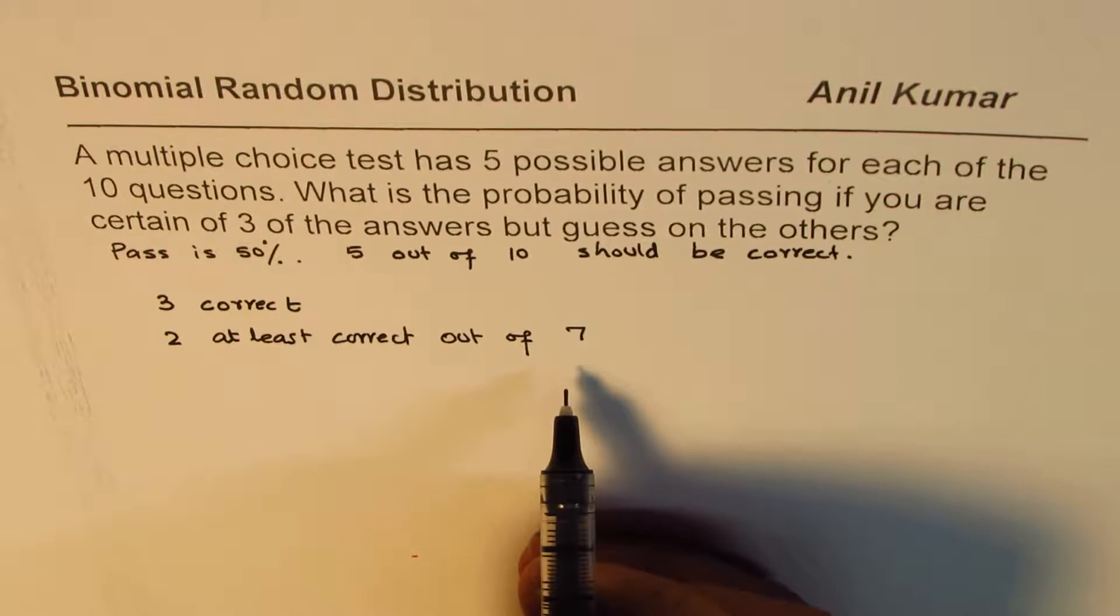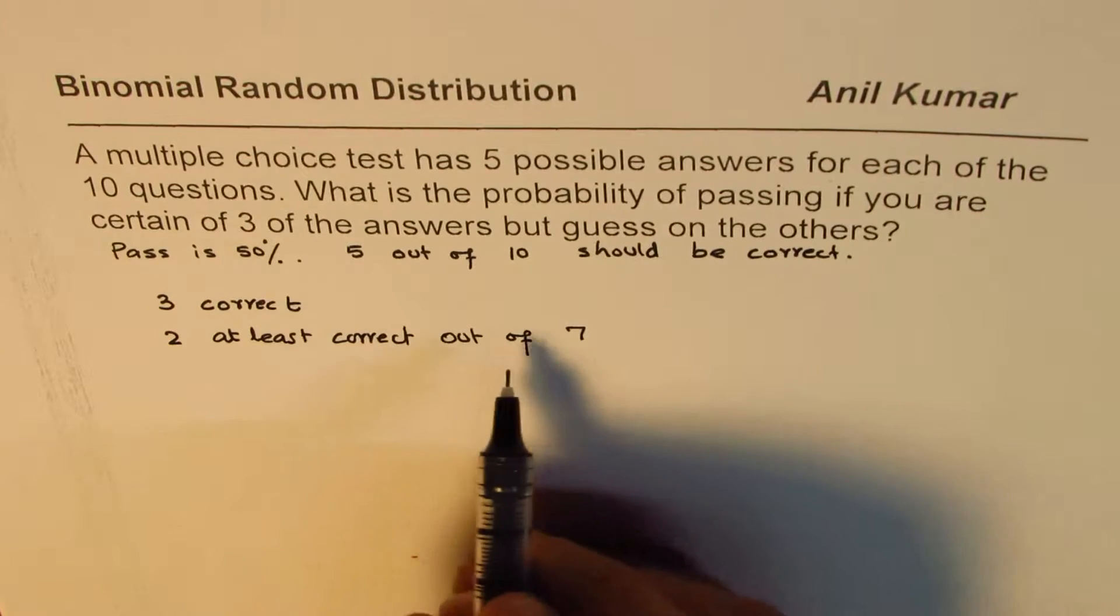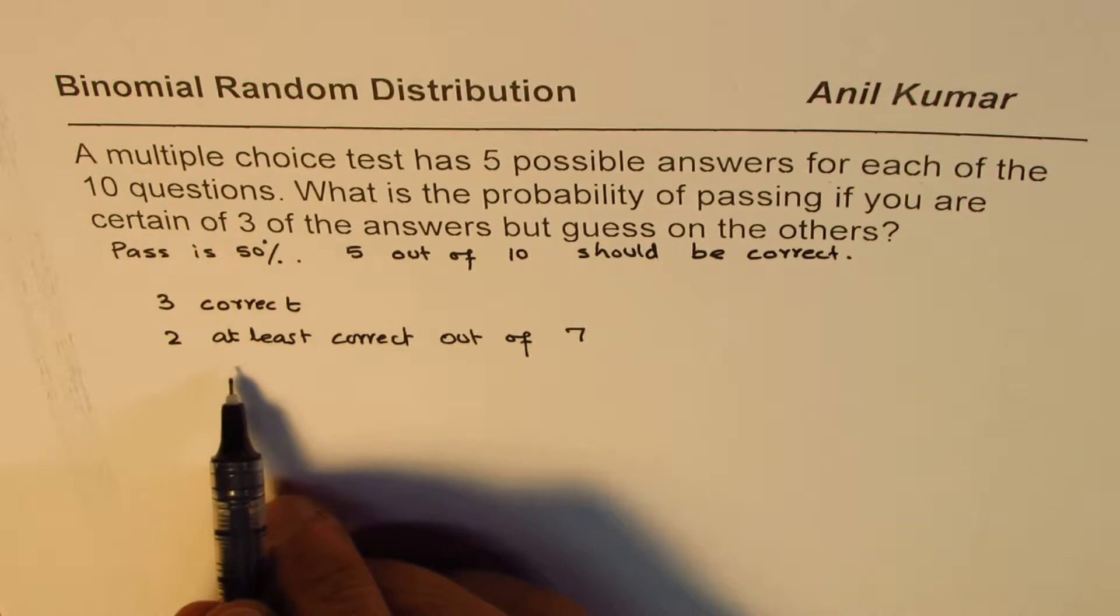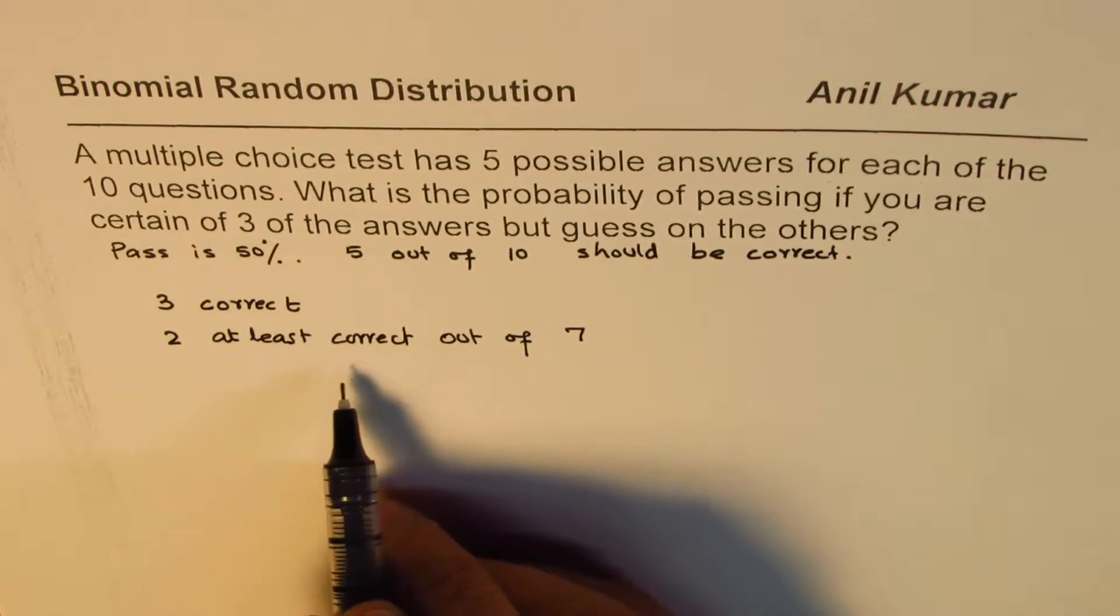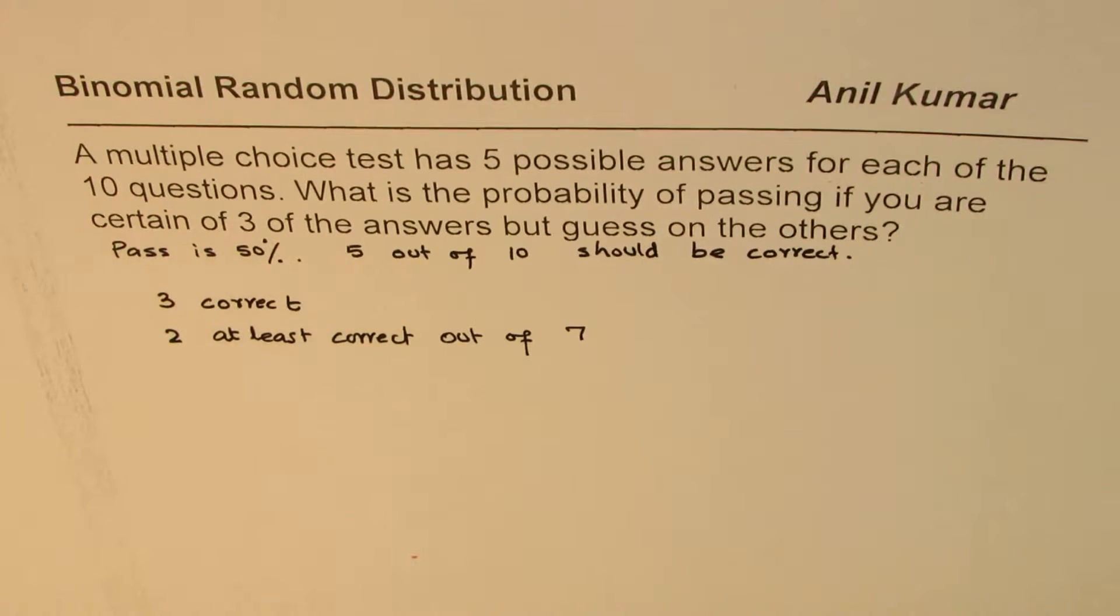So we are looking for that probability. I hope that point is clear to you. So that means we could get 2 correct, 3 correct, 4 correct, 5 correct, 6 correct, or 7 correct out of the remaining.